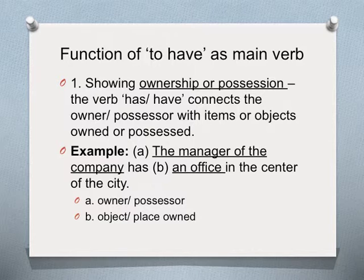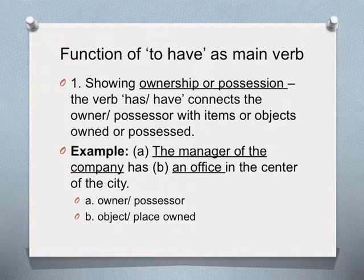Firstly, it shows ownership or possession. The verb has or have connects the owner or possessor with items or objects owned or possessed. An example of this is: the manager of the company has an office in the center of the city. The manager is the owner or possessor, and the office is the place that is owned or possessed.